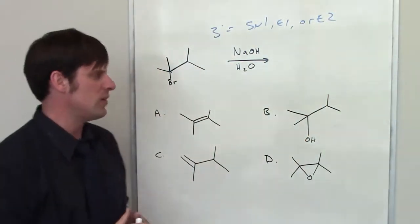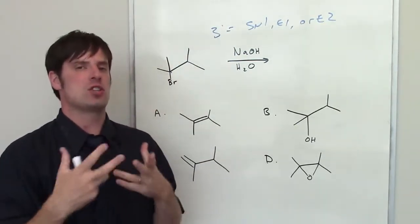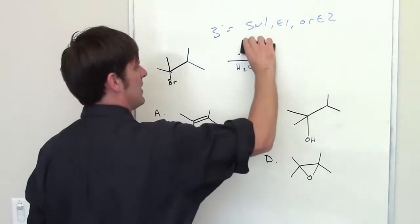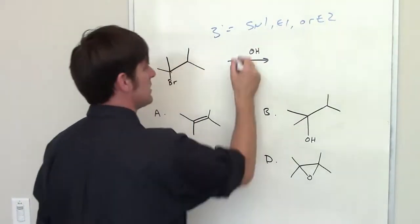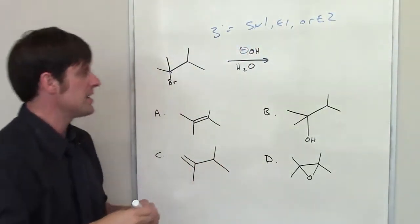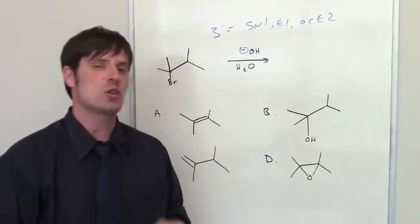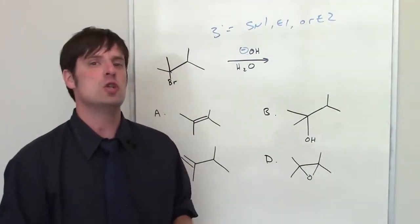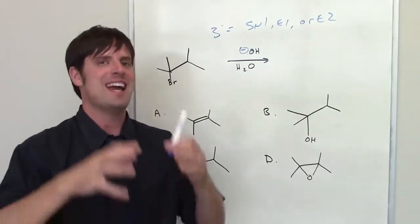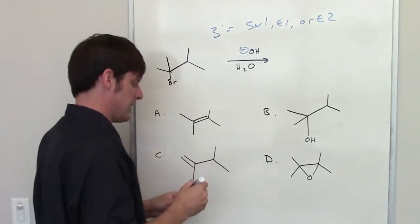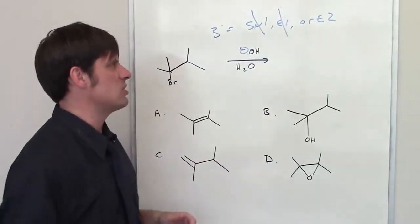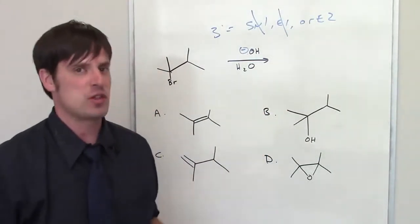Let's take a look at our nucleophile slash base. Is it strong or weak? Well, I've got a sodium bound to an OH. I can think of that sodium as effectively reacting as if it were just a negative charge. That is a localized negative charge on oxygen, so it is strong. Strong nucleophile slash bases do two reactions, either SN2 or E2. So I can cross off the SN1 and the E1. All I have left is E2. I don't have to ask the third question.